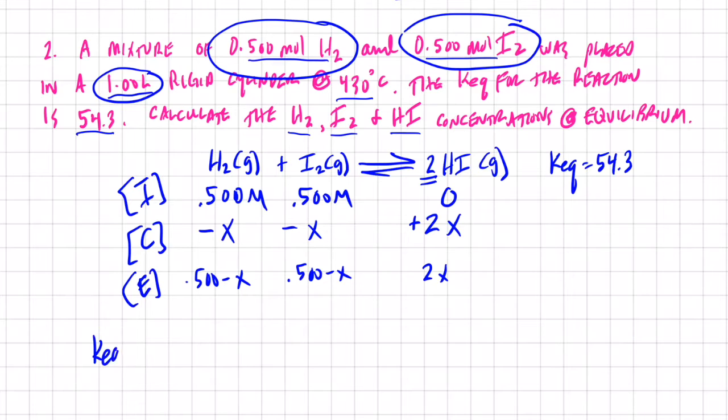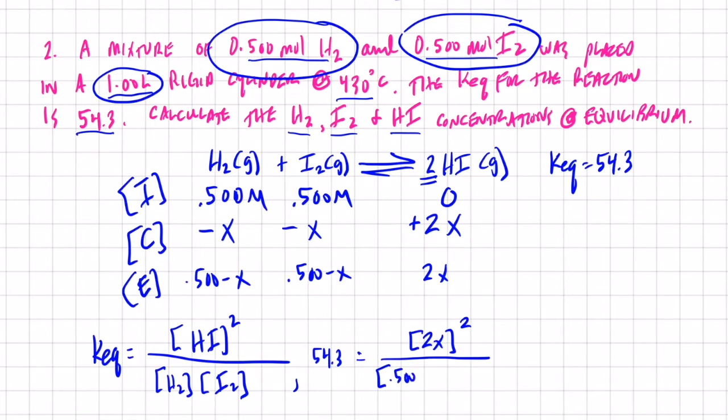Now let's write our equilibrium expression. We have HI squared over H2 and I2 concentrations. So we know the equilibrium constant is 54.3. That was given to us folks, equals the HI concentration at equilibrium, which is 2X, and we're squaring that,